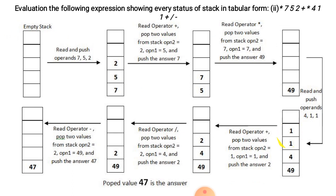Next is division — operator is found so division operation is performed on the top two elements: 4 divided by 2 is equal to 2. The answer 2 is pushed onto the stack. Last operator is minus — two operands pop from the stack and subtraction is performed: 49 minus 2 is equal to 47. The string is now empty, so 47 is the answer.